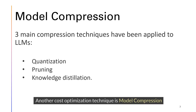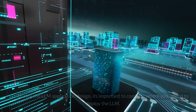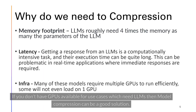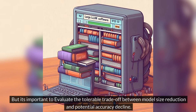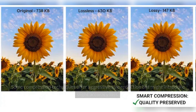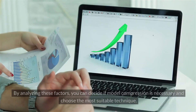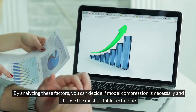Another cost optimization technique is model compression. Model compression techniques aim to reduce the model size while minimizing the impact on accuracy. During the LLM application design, it's important to consider where you intend to deploy the LLM. If you don't have GPUs available for use cases which need LLMs, then model compression can be a good solution. It's important to evaluate the tolerable trade-off between model size reduction and potential accuracy decline, as some compression techniques offer aggressive size reduction but might introduce slight accuracy loss.